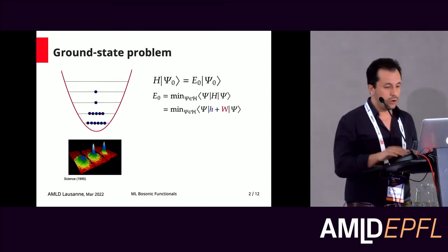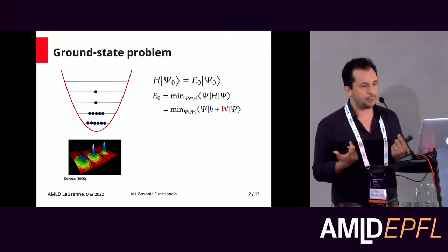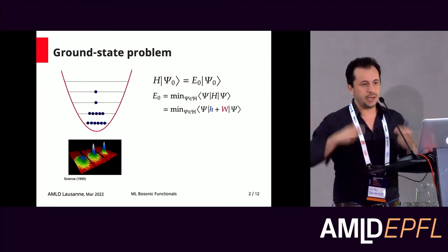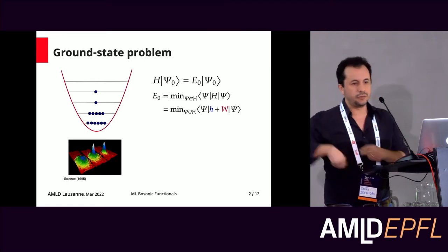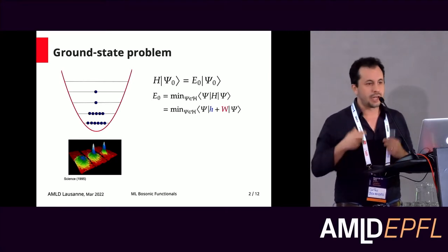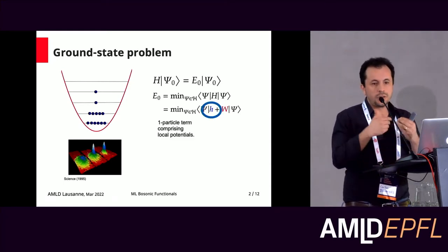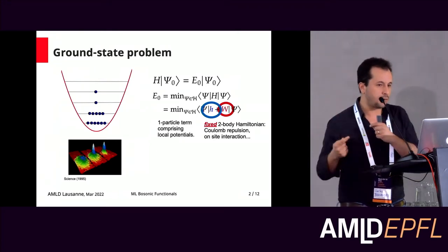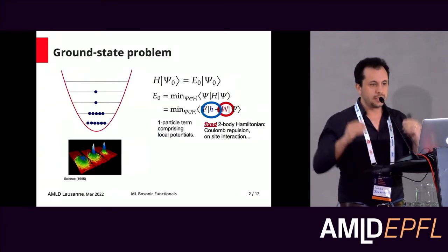All these Hamiltonians have two parts. One is H — the easy and fundamental part — which contains the external potential. The external potential can be a trap, or it can be a molecule defined by ions. This is what is particularly different from each system. What is common is W, the interacting term. You can think that electrons, whether they are in a superconductor or in a molecule, always interact via Coulomb interaction. In the Bose-Hubbard model they interact via on-site interaction. This interaction is fixed, independent of H. The one-particle term is easy to solve, and all the difficulty arises from the two-body interaction.